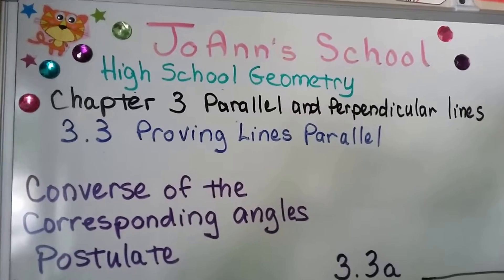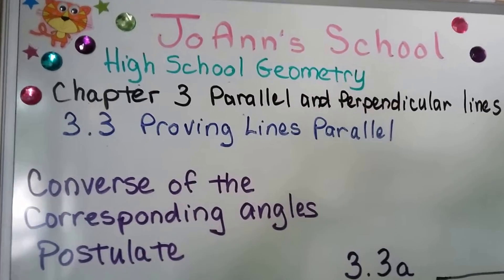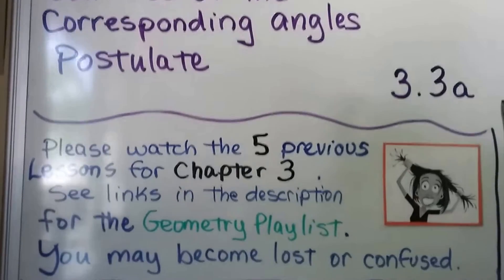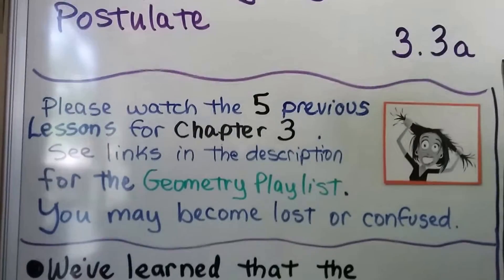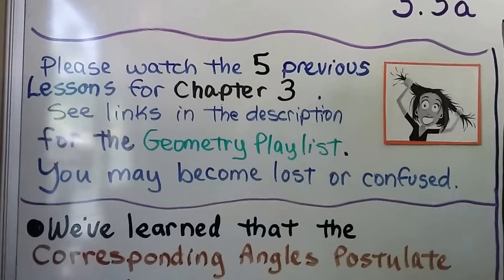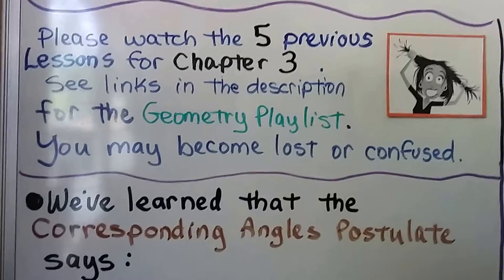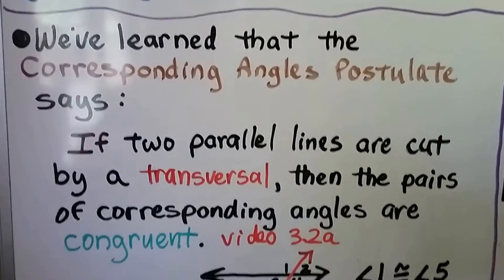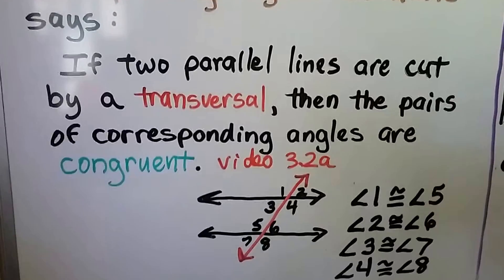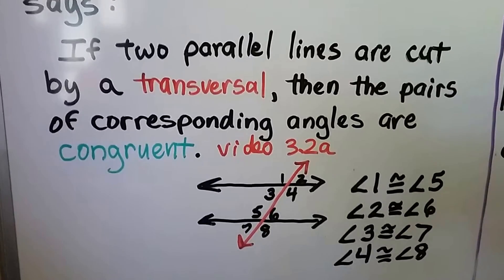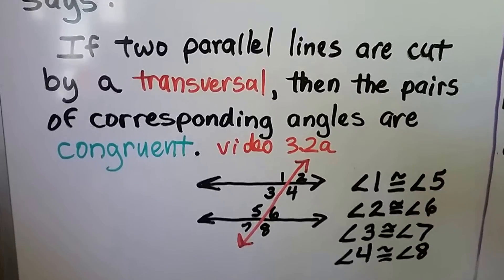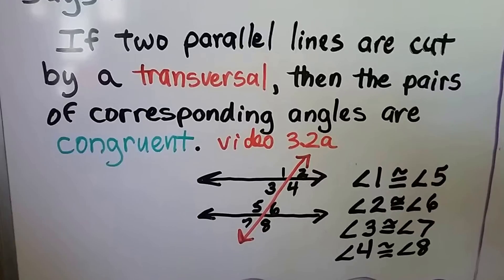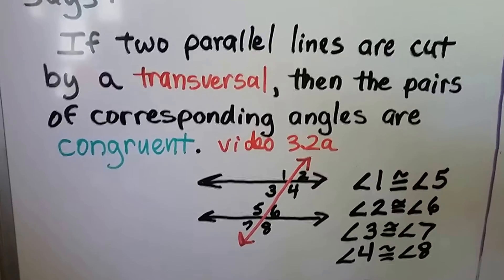Converse of the Corresponding Angles Postulate, Lesson 3.3a. We're up to five previous videos that are linked in the description for the geometry playlist. We've learned that the Corresponding Angles Postulate says if two parallel lines are cut by a transversal, then the pairs of corresponding angles are congruent. We learned that in Video 3.2a.